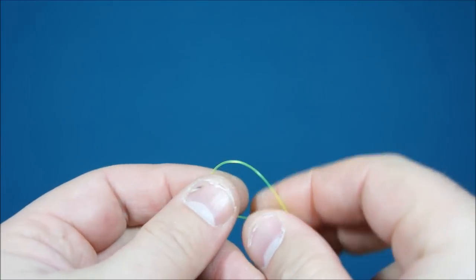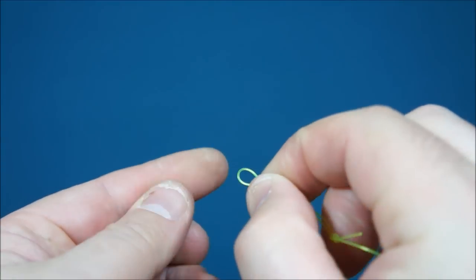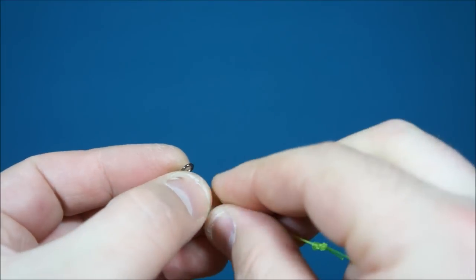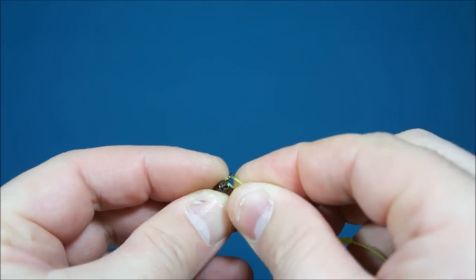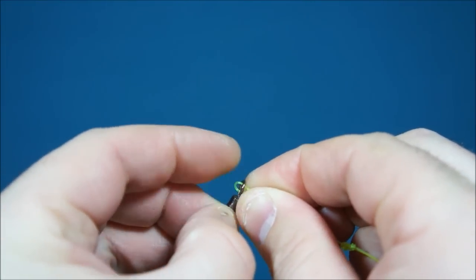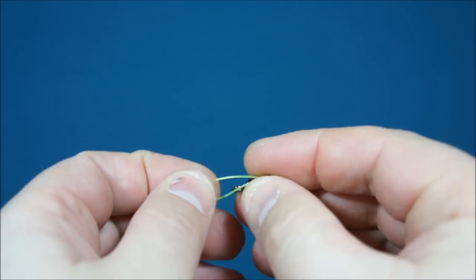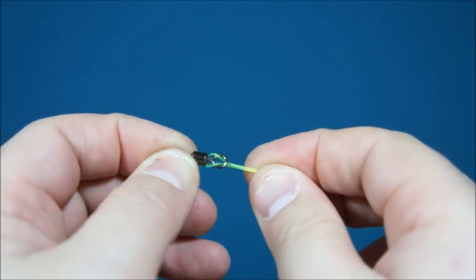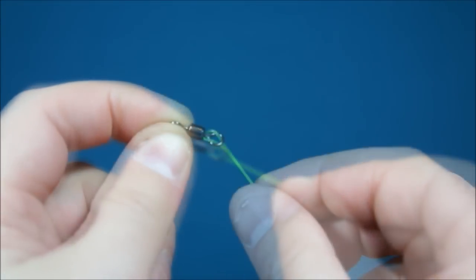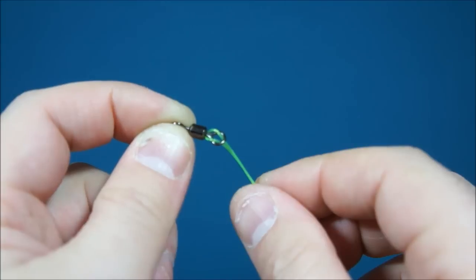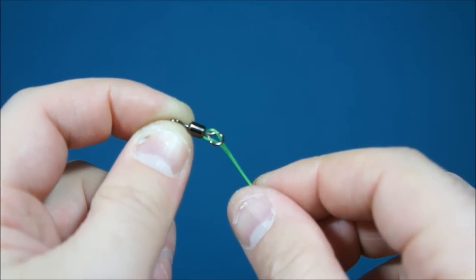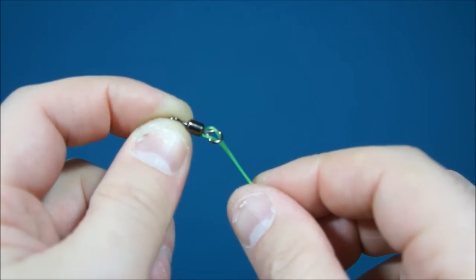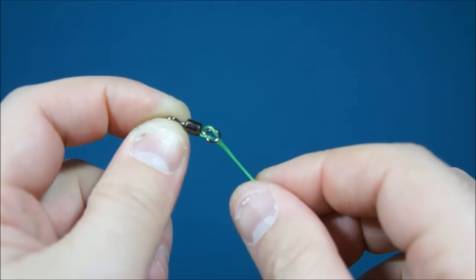As an optional extra, if you use a fixed spool reel or you're hand lining, then it's often good to add a swivel to the top of the rig. And I normally do this just by looping it over like this to form a connection. I very rarely add a swivel here because I fish normally with a multiplier reel and it doesn't seem to suffer from the same problems of line twists that fixed spool reels do or you get when you're hand lining. So it's up to you.